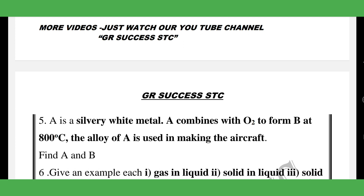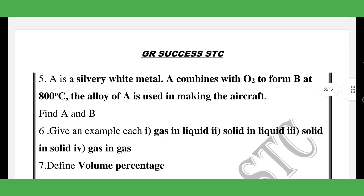Next question: A is a silver-white metal. A combines with oxygen to form B at 800 degrees Celsius. The law of A is used to make aircraft. Identify A and B — this is a most important question, also a PTA question.